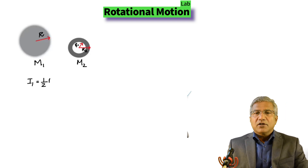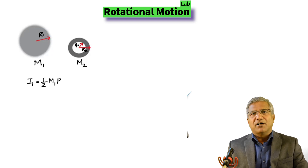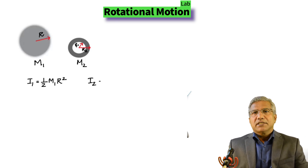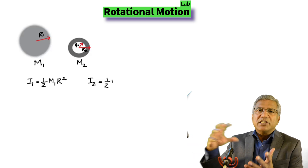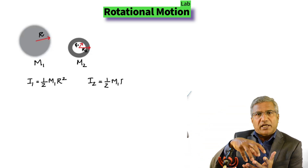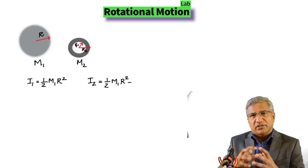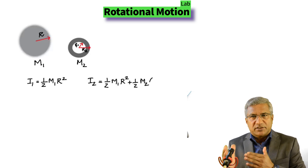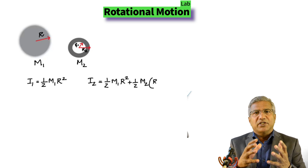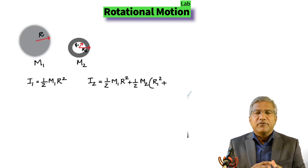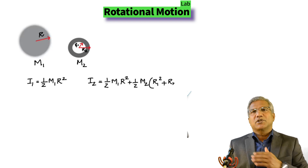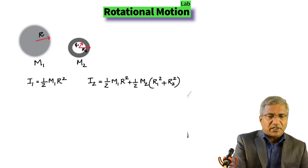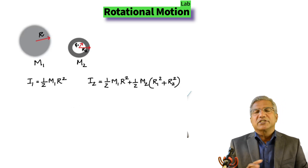The rotational inertia of a disk is given by one-half MR squared — in this case, one-half M1 R squared. In the second case, it's the disk and the ring placed on top, so you have the combined rotational inertia I2. Therefore, I2 equals one-half M1 R squared, which is the rotational inertia of the disk, plus one-half M2 times R1 squared plus R2 squared, which is the rotational inertia of the ring.